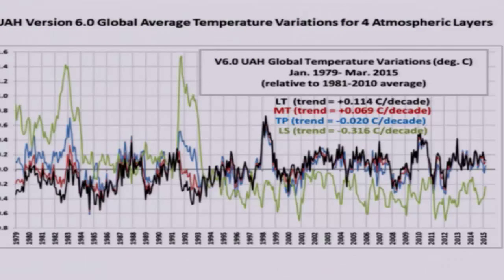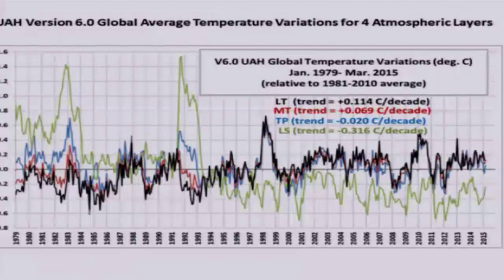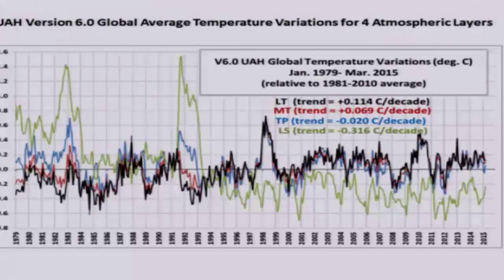This is a time series of the main nominal layer measurements. For instance, that green curve with the really big excursions — that's the lower stratosphere. There were big warm events from El Chichon and Mount Pinatubo; that's what caused those warm events. The other layers are in different colors. These are the time series of the different layers, monthly temperatures since 1979.